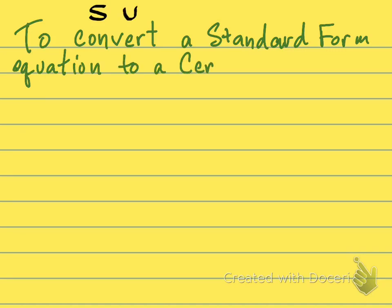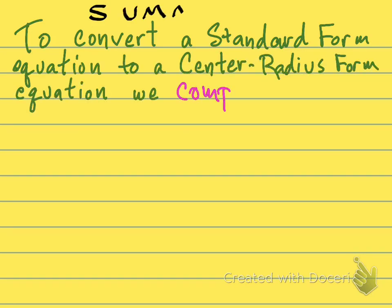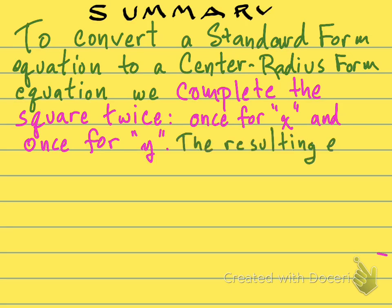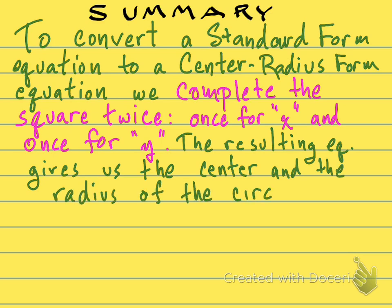Let's just do a quick summary of the process here, and we'll wrap it up. To convert a standard form equation of a circle to a center-radius form equation of a circle, we will use the completing the square process. We will use it twice, once for x and once for y. And the resulting equation just gives us right straightforwardly the center and the radius of the circle. And that's it. That's how you do it.